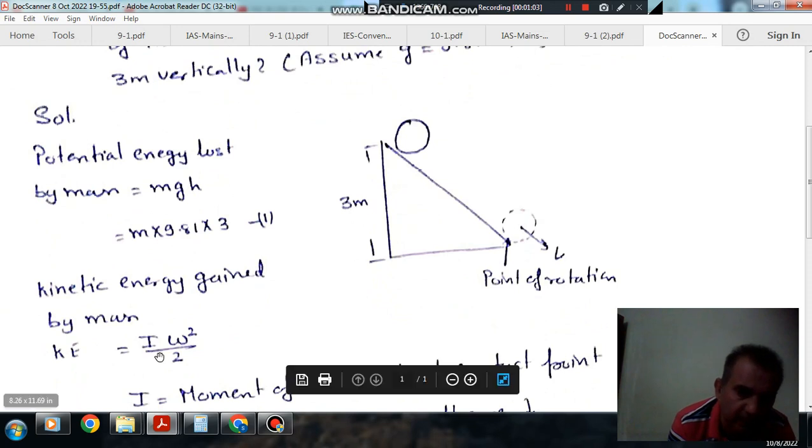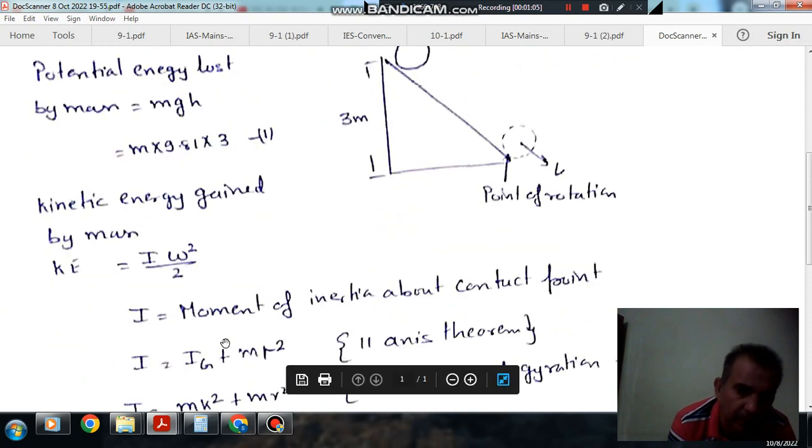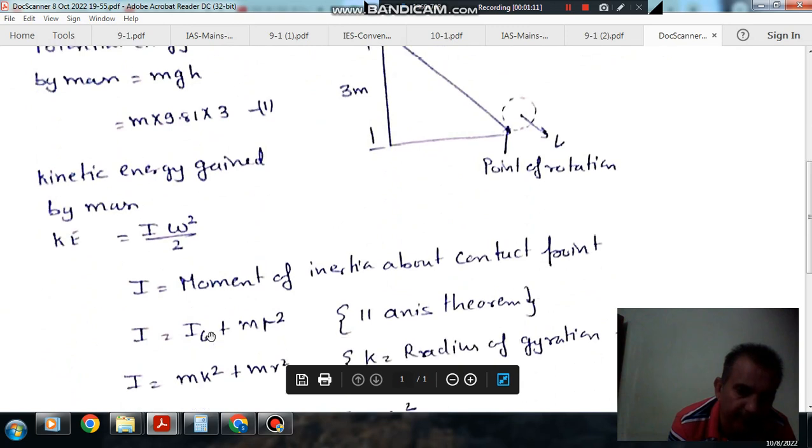I is the moment of inertia about the point of rotation. Ig is the moment of inertia about the center, and mr squared is about the contact point. So I equals Ig plus mr squared.